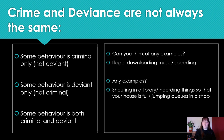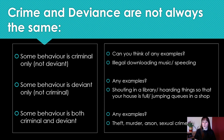However, some behaviours are both — they are both crimes and deviant. Theft, murder, arson, sexual crimes — all of these are both deviant. Being a paedophile is both deviant and also a crime.